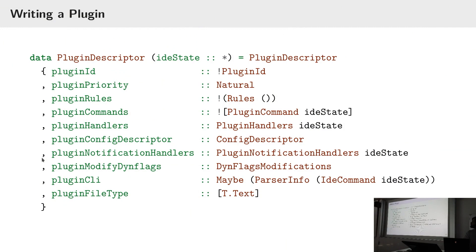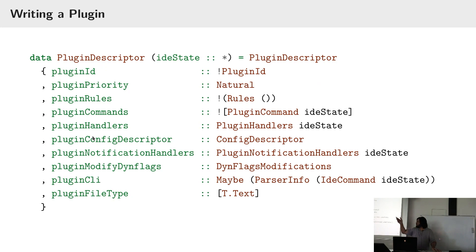Your plugin can also provide some of its own configuration so that you can have configuration in the editor for your specific plugin — that's what the plugin config descriptor does. You might also want to modify build flags or insert your own GHC plugins into the build. If your plugin requires a special GHC flag like FStrictness or something, you can do that there.